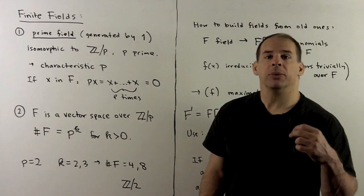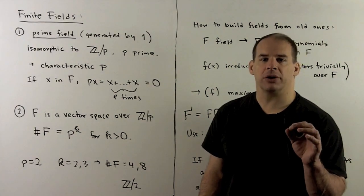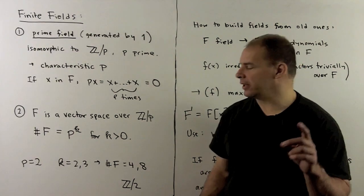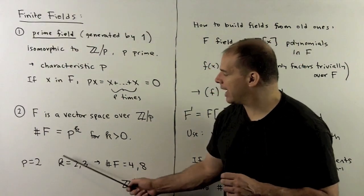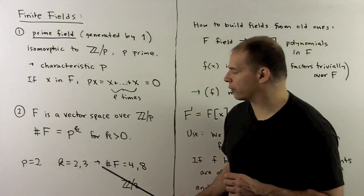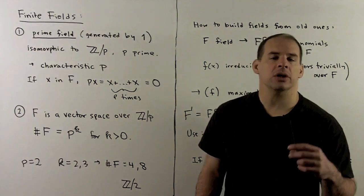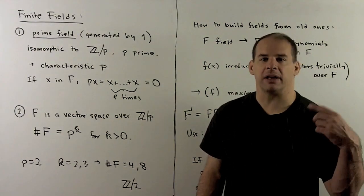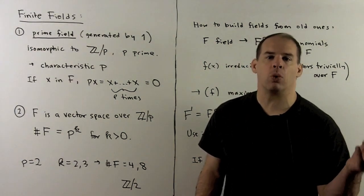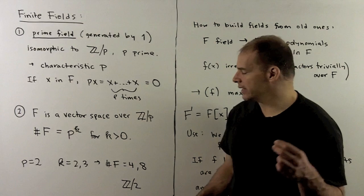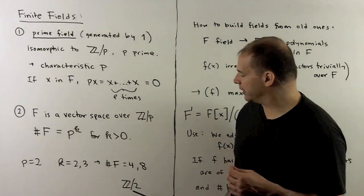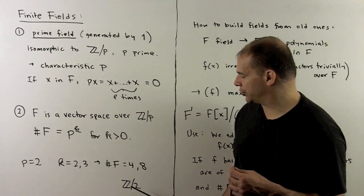Here we're going to focus on constructing finite fields when p is 2 and k is equal to 2 or 3, so we're looking at finite fields of order 4 or 8. In this case the prime field will be Z mod 2.